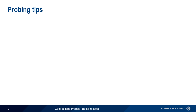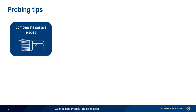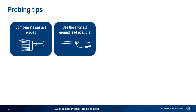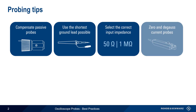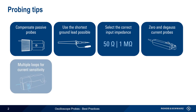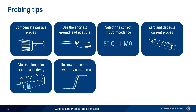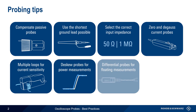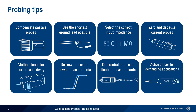The eight tips we'll cover in this presentation are: compensating passive probes, using a short ground lead, selecting the correct input impedance, zeroing and degaussing current probes, increasing current measurement sensitivity using multiple loops, de-skewing probes for power measurements, making floating measurements using differential probes, and using active probes for demanding measurement applications.